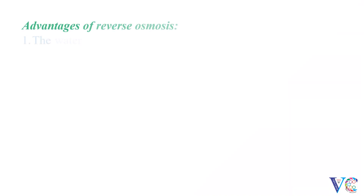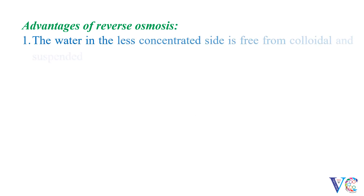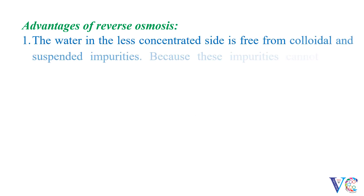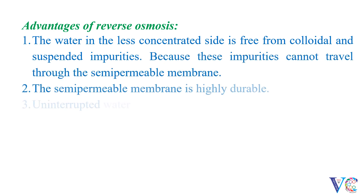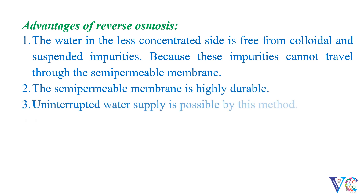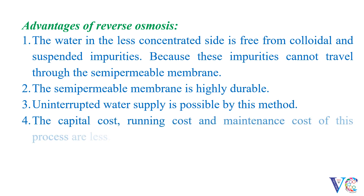Advantages of reverse osmosis: the water in the less concentrated side is free from colloidal and suspended impurities, because these impurities cannot travel through the semi-permeable membrane. The semi-permeable membrane is highly durable. Uninterrupted water supply is possible by this method. The capital cost, running cost, and maintenance cost of this process are less.